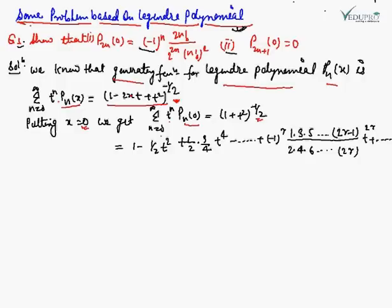Using the binomial expansion of (1 + t²)^(−1/2), we get: 1 − (1/2)t² + (1·3/4)t⁴ + ... + (−1)ʳ [1·3·5···(2r−1)] / [2·4·6···2r] · t^(2r) + ... This is the standard expansion of (1 + x)^(−1/2).